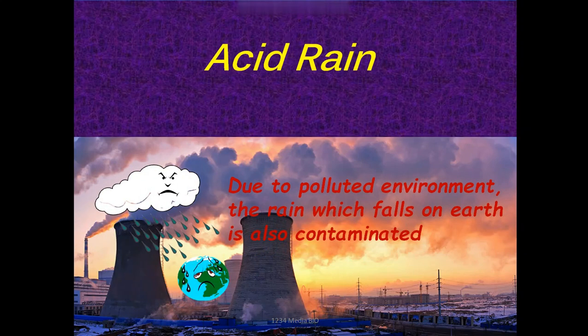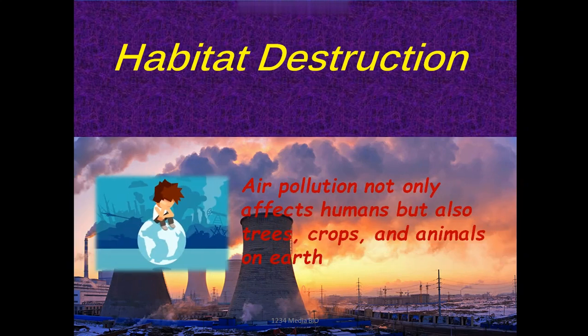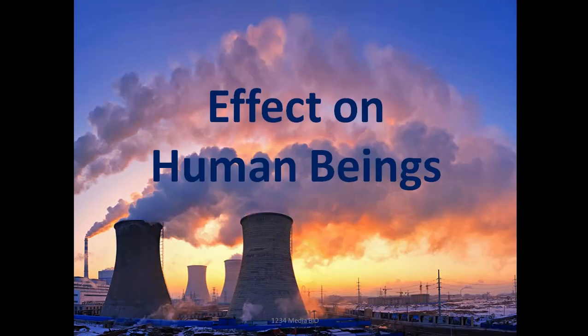Next, dirty air — poor air quality all around us impacts directly on our health. Acid rain: due to a polluted environment, the rain which falls on Earth is also contaminated. Last but not least, habitat destruction — air pollution not only affects humans but also trees, crops, and animals on Earth.